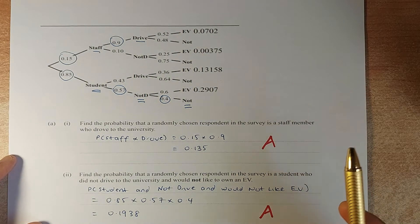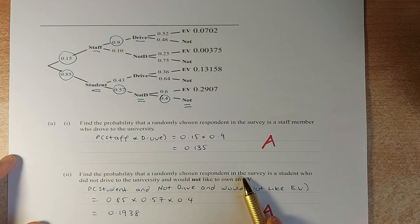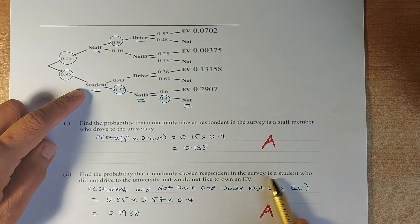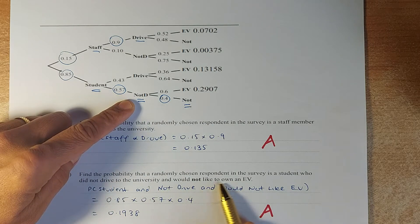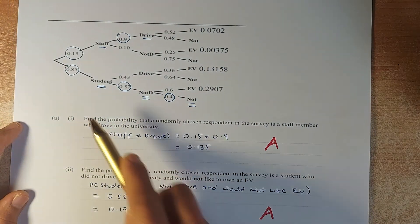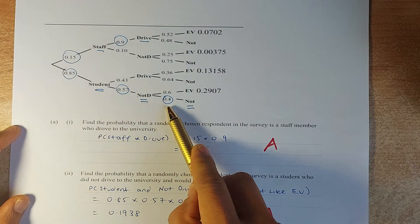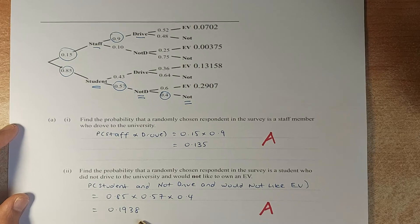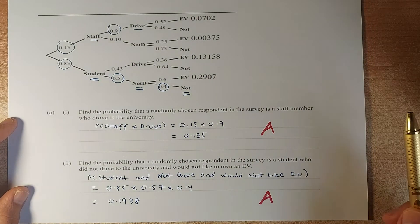Now the second Achieve question: find the probability that a randomly chosen respondent is a student who did not drive and would not like an EV. So you multiply 0.85 times 0.57 times 0.4. Put that in your calculator and it is 0.1938, and that will give you your second Achieve.